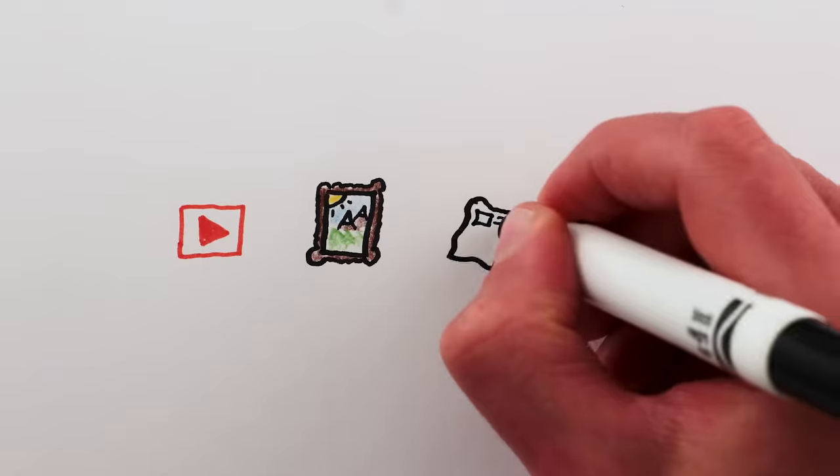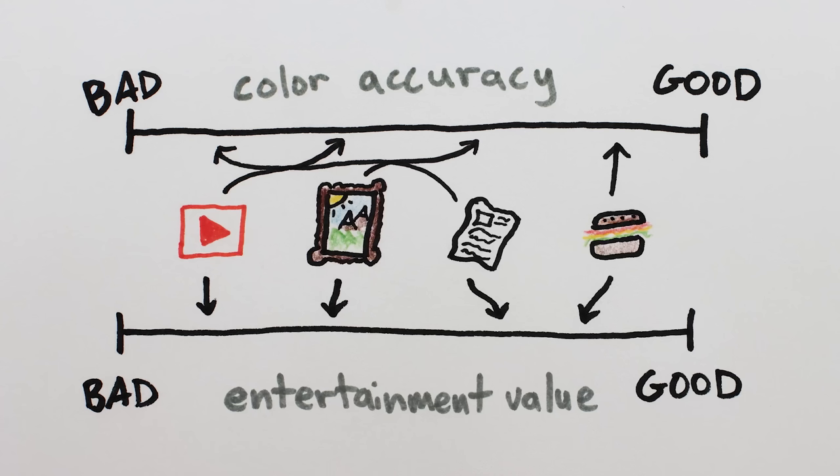Any creation, whether a video, a piece of art, a news article, or a meal, will have different levels of quality on different axes.